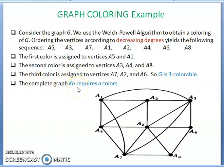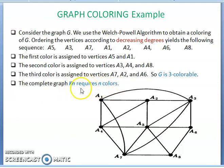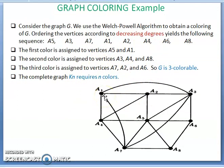For a complete graph KN, it requires N colors, because each and every vertex is adjacent to all remaining vertices. That is why you give N different colors for the complete graph.